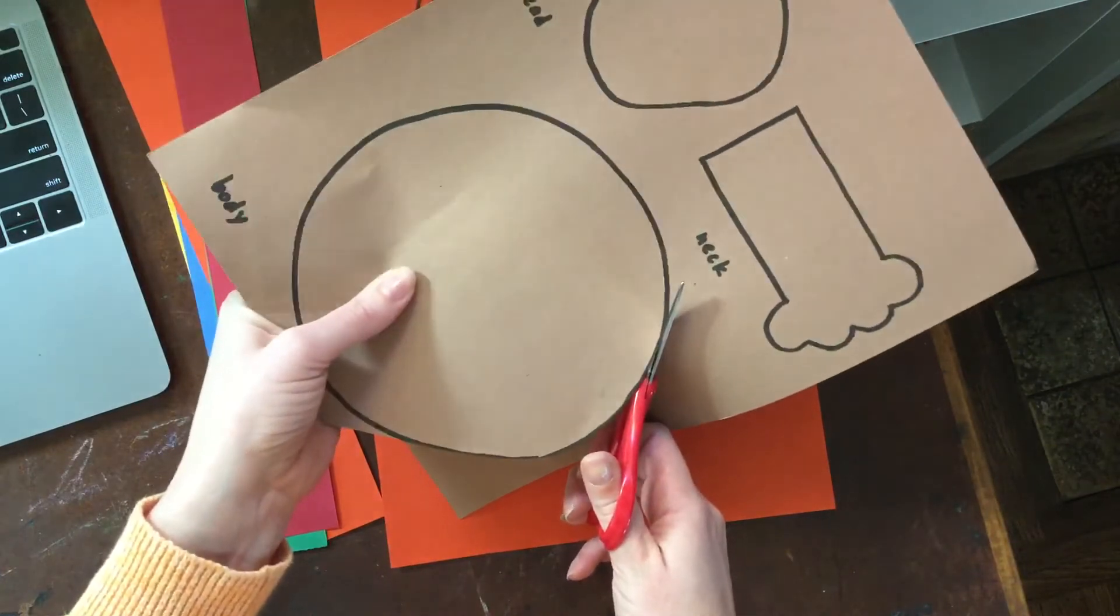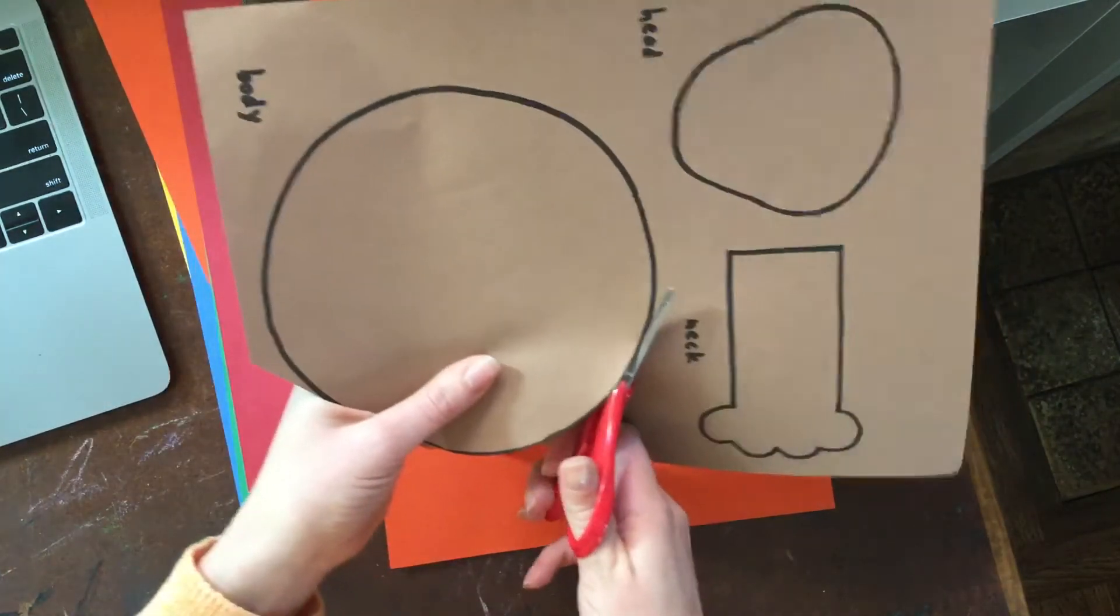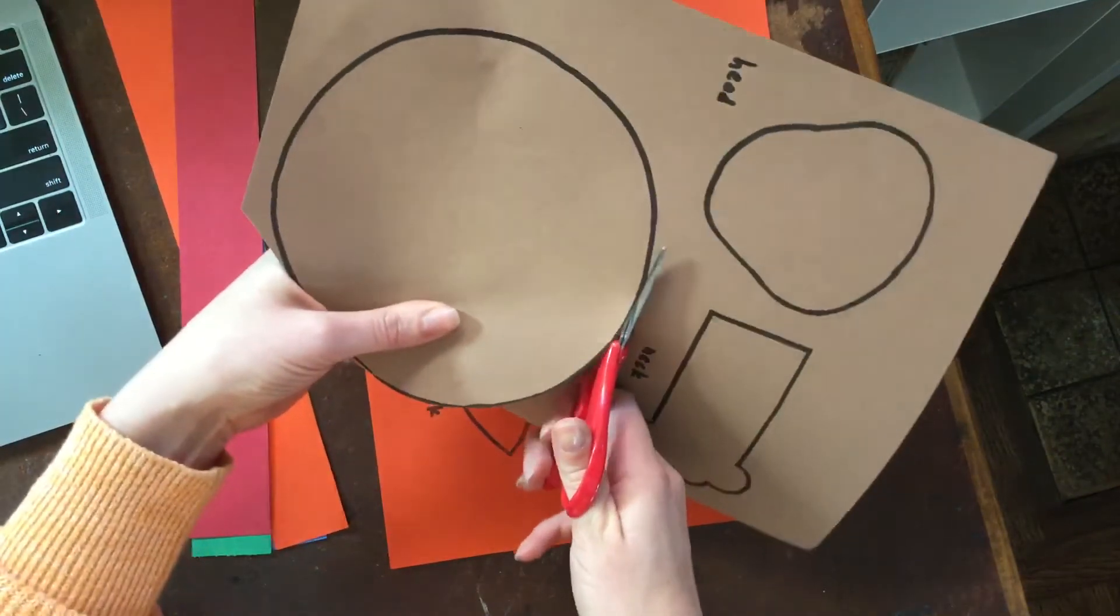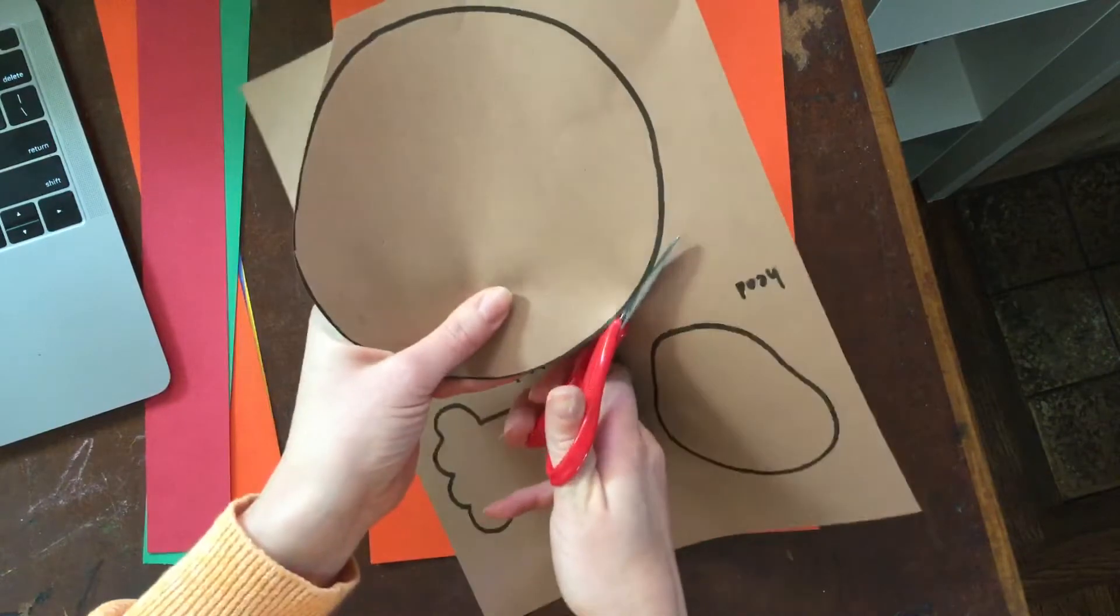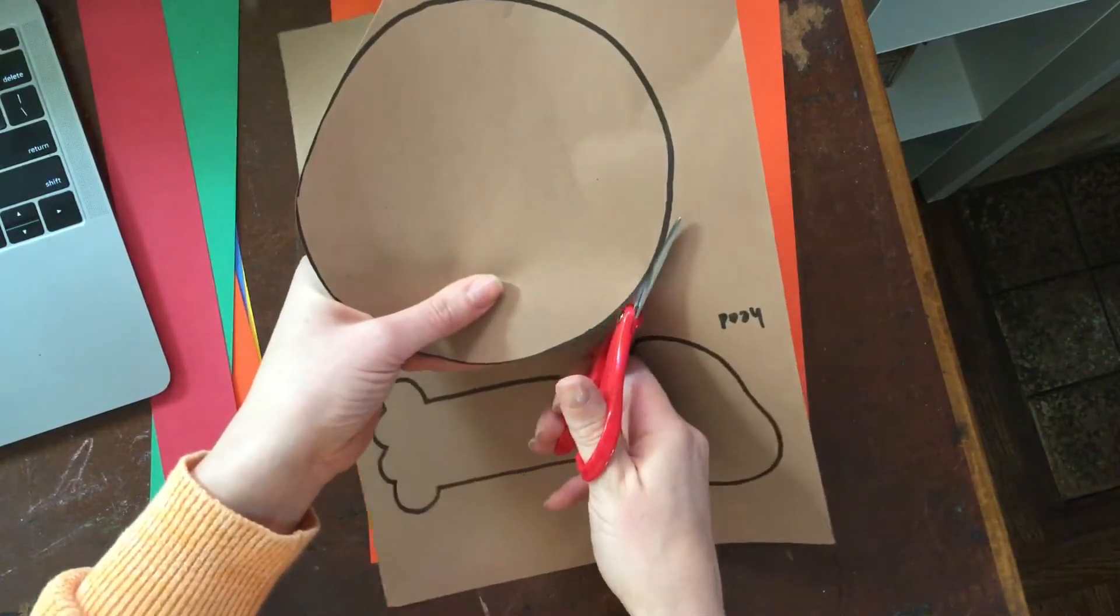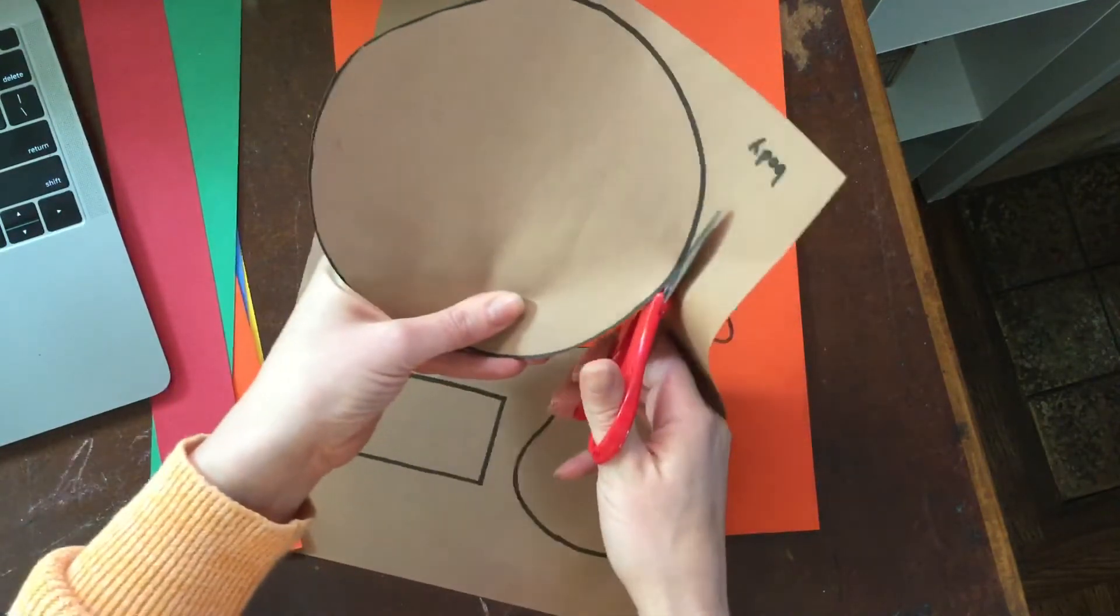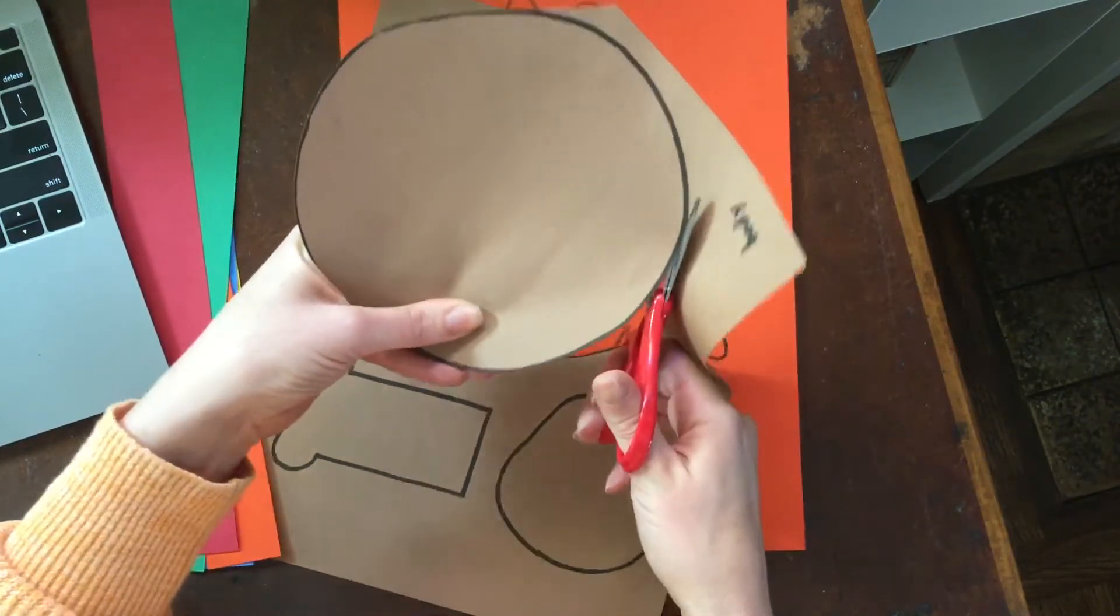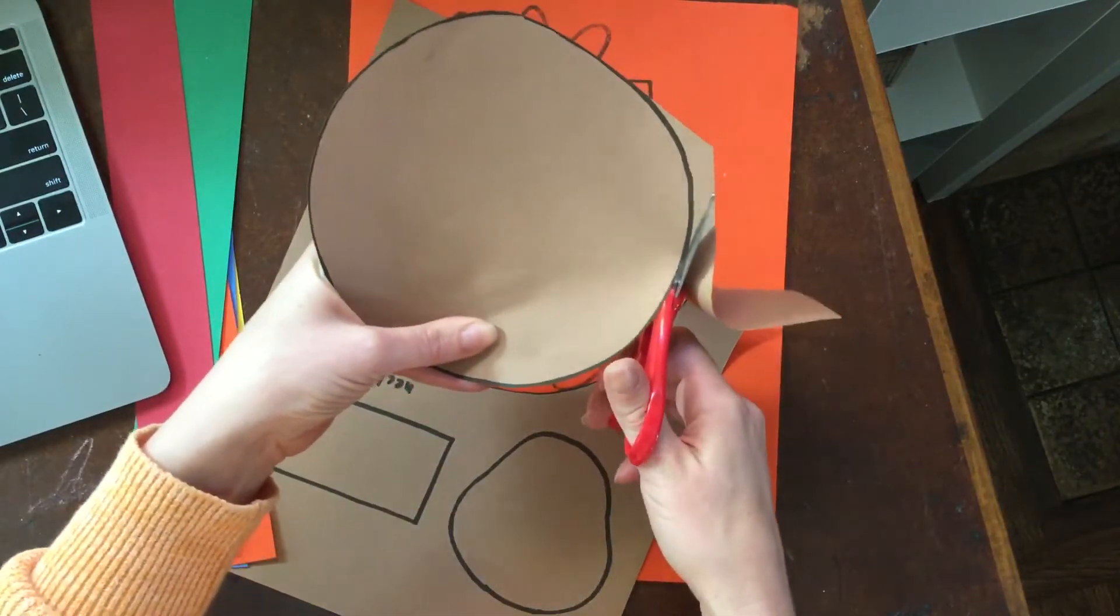See how I'm turning the page with my other hand? So cutting with one hand, turning the page with the other hand. I'm just doing little cuts. I'm not closing the scissors all the way as I go around. I'm just kind of doing little tiny bites.